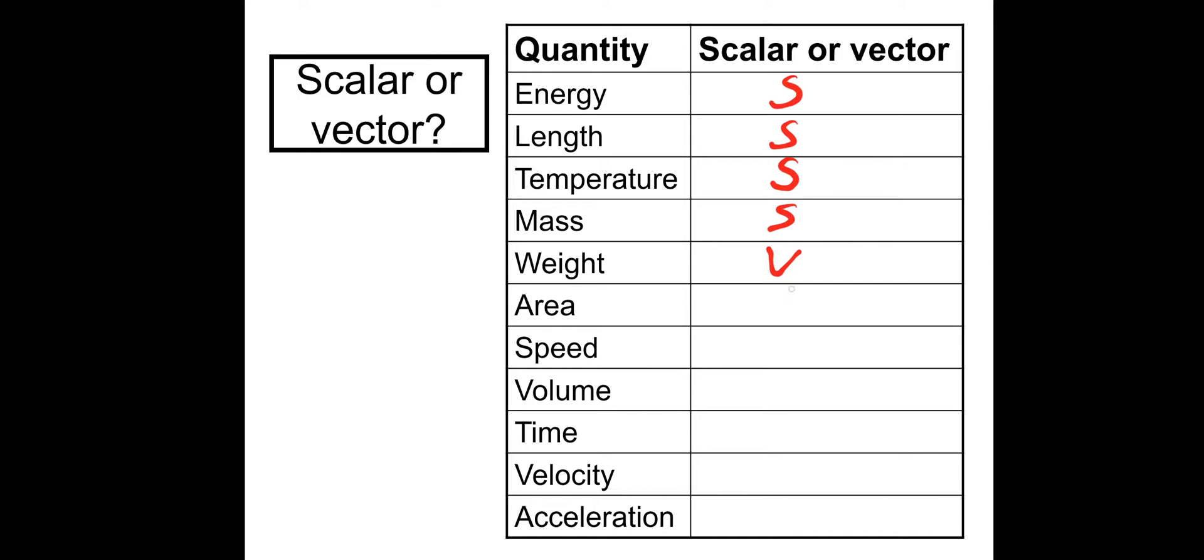Area, that's just length times length, so that would be a scalar as well. Speed is a scalar quantity. Volume is also a scalar quantity. Time. Bit of confusion with this one, whether it could be a vector because you can go forward in time or backwards in time. But, it's a scalar.